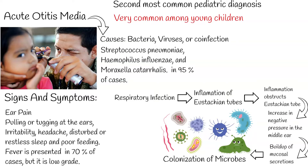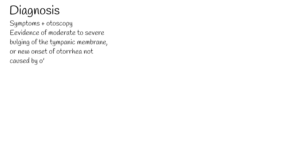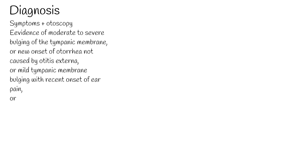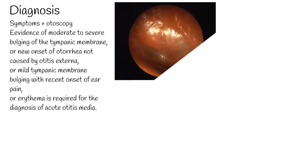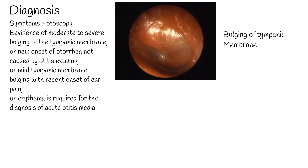Usually no lab test or imaging is needed. Otitis media is diagnosed clinically via objective findings on physical exam, including otoscopy, combined with the patient's history and presenting signs and symptoms. According to guidelines set forth by the American Academy of Pediatrics, evidence of moderate to severe bulging of the tympanic membrane, or new onset of otorrhea not caused by otitis externa, or mild tympanic membrane bulging with recent onset of ear pain or erythema, is required for the diagnosis of acute otitis media. Otoscopic examination should be the first and most convenient way of examining the ear.